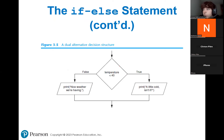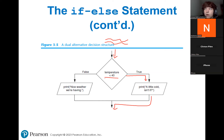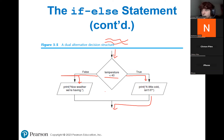Here's a flowchart example to visualize this. We get to our decision structure with the condition: is temperature less than 40? If yes, our code follows the true arrow and prints 'a little cold, isn't it?' then continues execution as normal. However, if temperature less than 40 evaluates to false — meaning it's more than 40 degrees — we follow the false line and print 'nice weather we are having.'